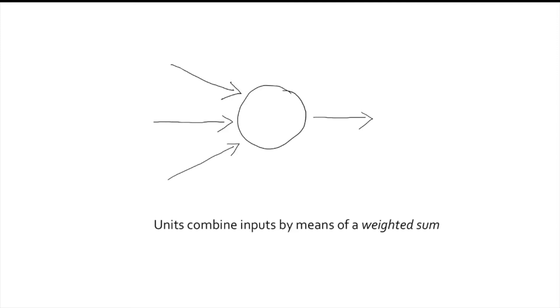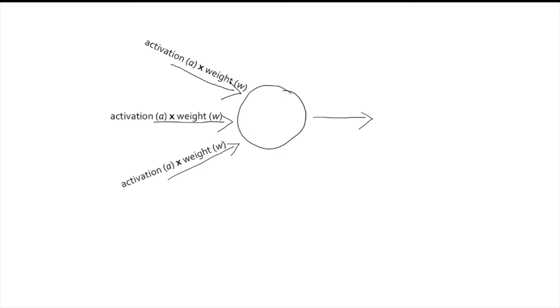You can think of these units as little devices that perform very simple computations. What they do is combine the inputs from the units that lead to them by means of a weighted sum. This means that each of the neurons feeding into our unit contributes its activation value at the time, and that this value is multiplied by the weight of its connection, so that the greater the weight, the greater the influence of this contributing unit.